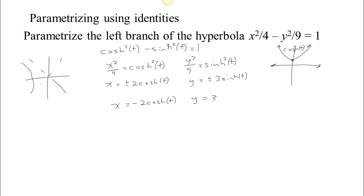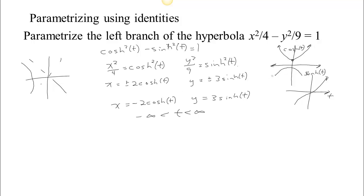The y values we can choose either way. If we choose y equals 3 sinh t, recall that sinh increases as t increases. So we run t from negative infinity to infinity. Way back, both x and y are very negative. As time goes forward, x increases toward 0 then turns back out — since negative cosh comes in and goes back out — while y values always increase. So we trace the entire left branch going upward.